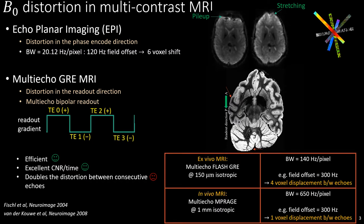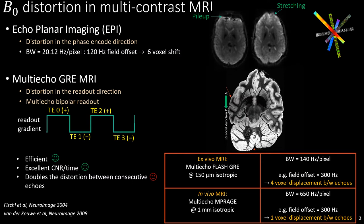For the ultra-high resolution multi-echo FLASH ex vivo MRI application, we use low bandwidth to maximize the SNR, but this induces large distortions, especially near small air bubbles, which are common in these preparations. While in vivo multi-echo MPRAGE distortions are much less, it is still common to observe at least a one voxel displacement in the temporal lobe and the sinuses.